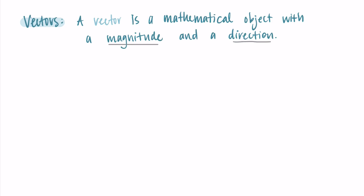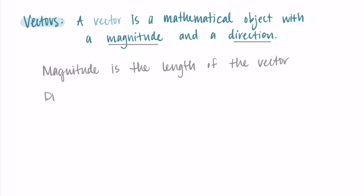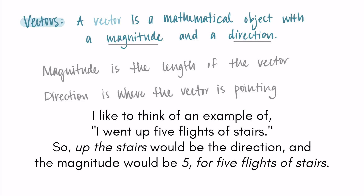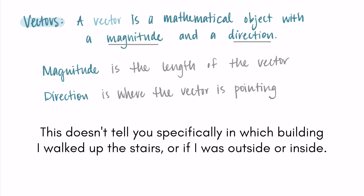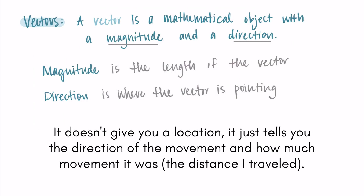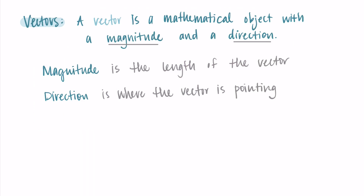Let's talk about the words magnitude and direction. Magnitude is the length of the vector — the distance from the beginning to the end of it. Direction represents where the vector is pointing. For example, if I went up five flights of stairs, 'up the stairs' would be the direction and the magnitude would be five. This doesn't tell you which building or whether you were inside or outside — it just tells you the direction and how much movement occurred. Magnitude is length, and direction is what you think it is.